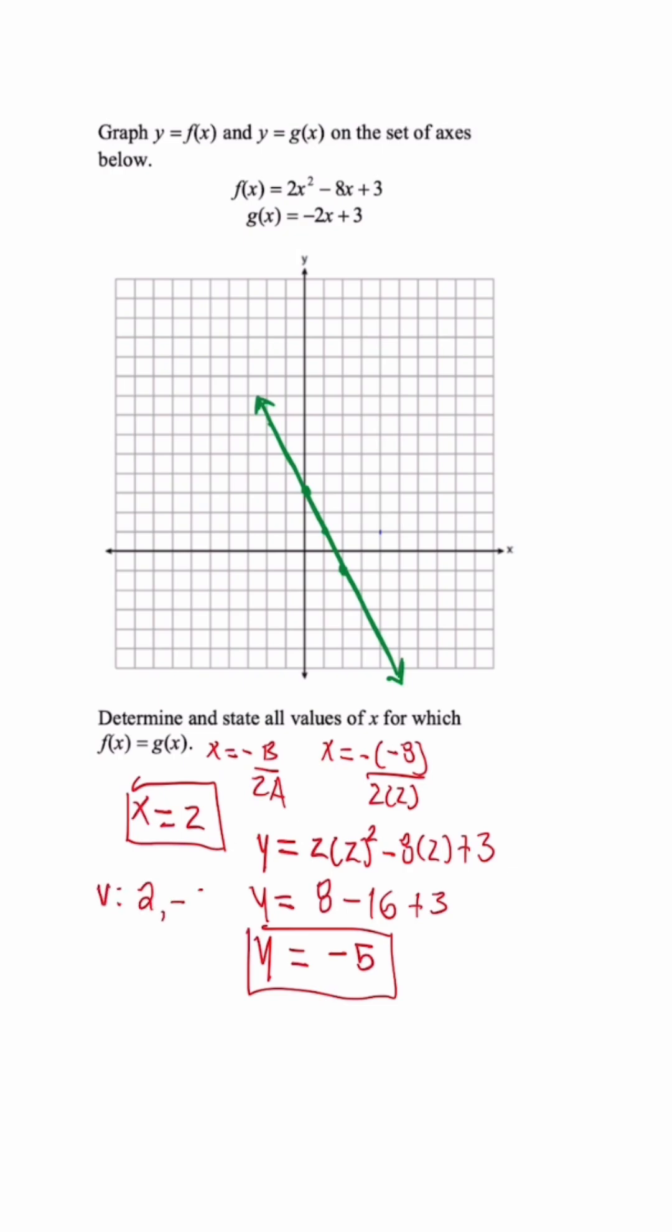So we could plot that next point. Now what we want to do is at least get two more points for the parabola, so we're going to do when x is 3 and x is 4, so once we start simplifying.